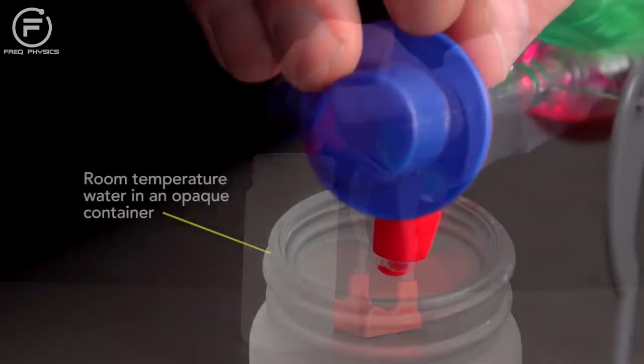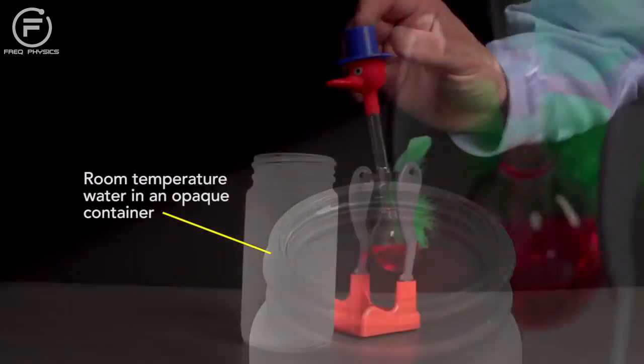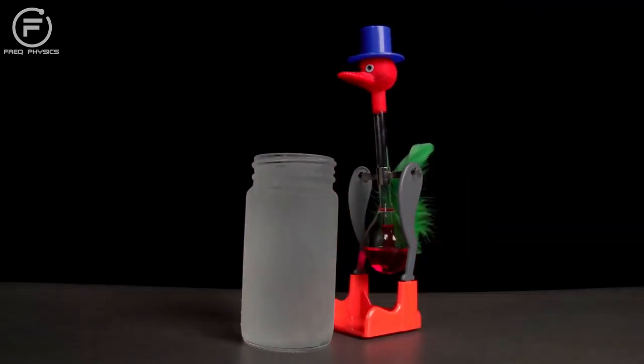Wet the bird's beak thoroughly with room temperature water. The opaque container makes it look chilled, but it isn't. Then stand it upright. It'll take a few seconds for it to start drinking.